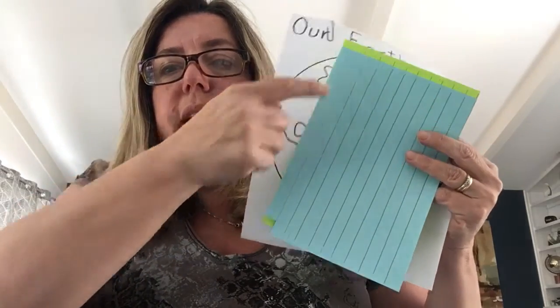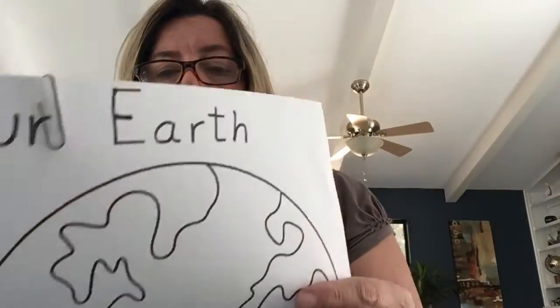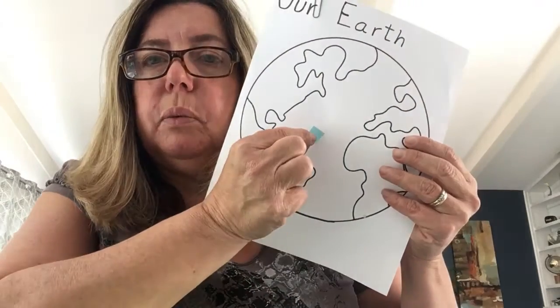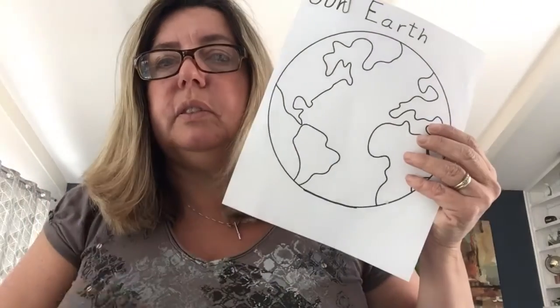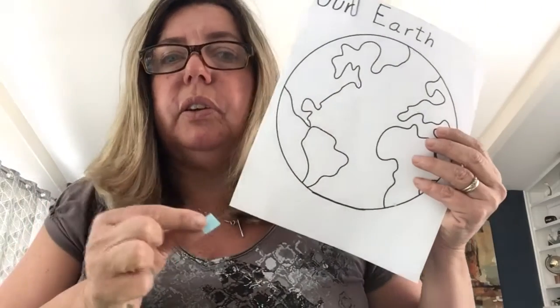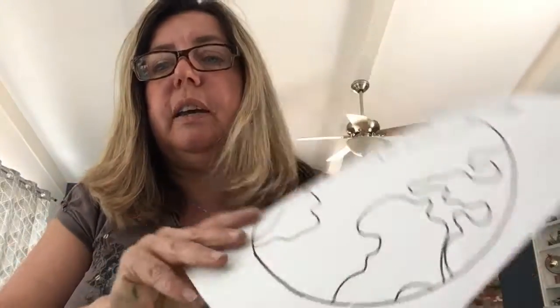Your child is going to cut along the line — cut little circles of blue representing the water, and green representing the earth. Let me know if you need scissors; I have some training scissors here. Also, please let me know if you need scissors or glue for the activities.